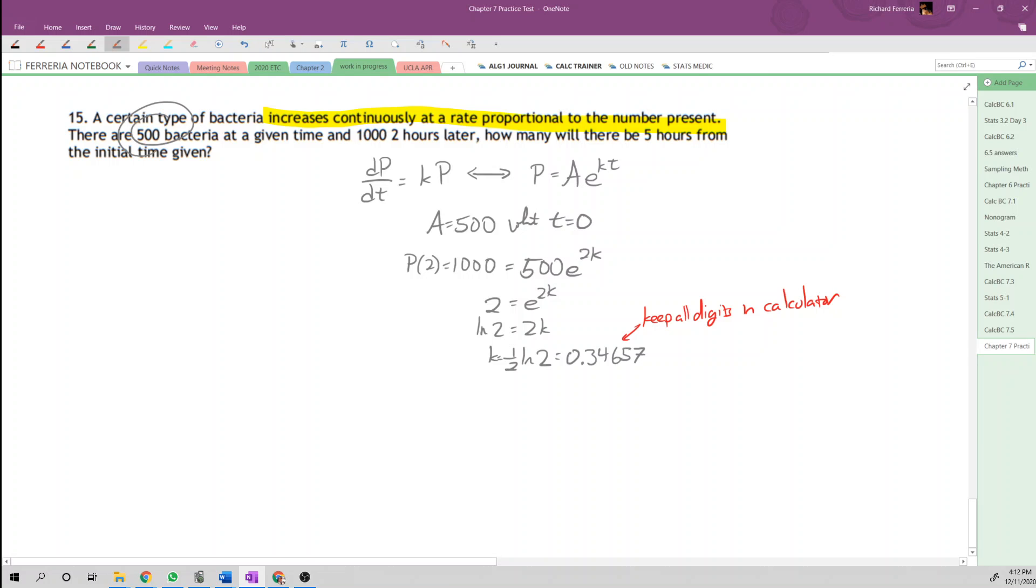Now we have our exponential growth model: P(t) equals 500 times e to the kt, where k is given here. Now we want to know how many bacteria will there be five hours from that initial time.